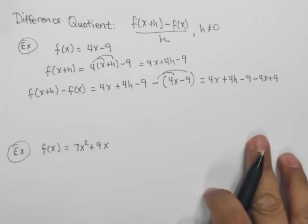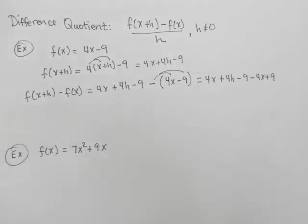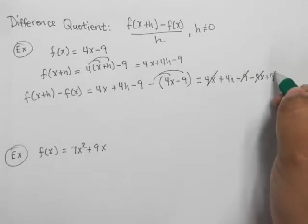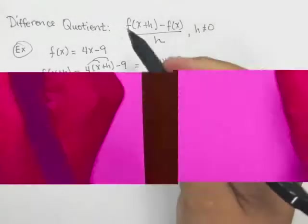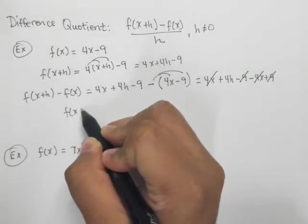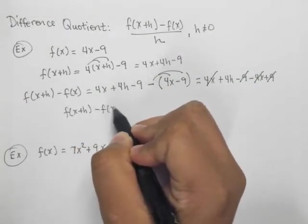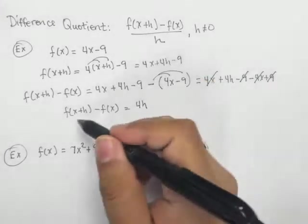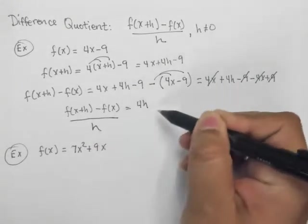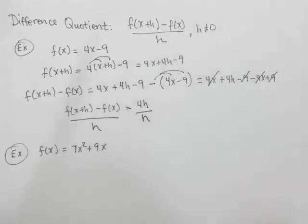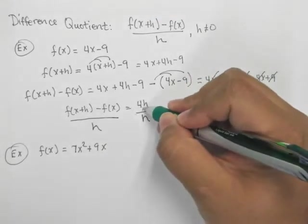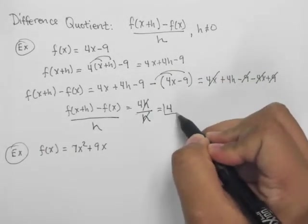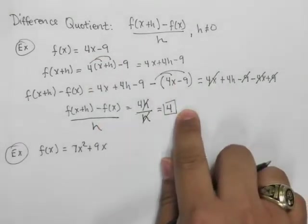And when I combine like terms, it's pretty easy to see what happens. So the 4x and the minus 4x cancel themselves out, and the minus 9 and the plus 9 cancel themselves out. So this leaves me with my f of x plus h minus f of x being equal to 4h. And the last step is to do the quotient. So I'm going to divide this by h. Well, in this case, the h's cross themselves out, leaving me with just 4. So the difference quotient here is just 4.